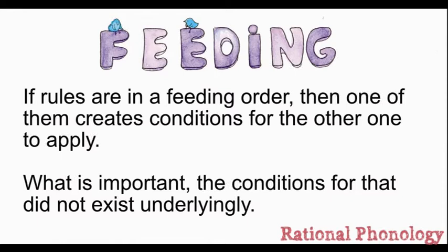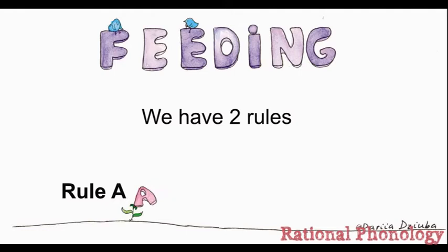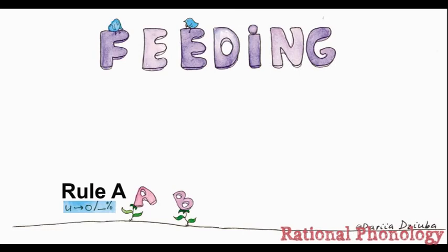So let's imagine that we have two rules. Rule A and Rule B. Rule A says that a U turns into an O at the end of a word. Rule B says that P turns into a K before an O.